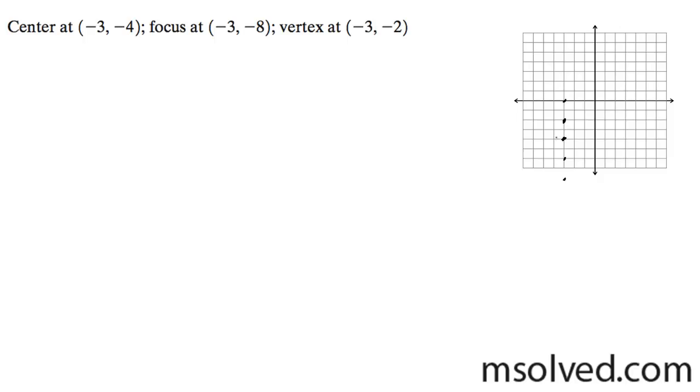The focus they give us is negative three, negative eight, so it's off the graph a little bit. And then one of the vertices they give us is negative three, negative two, which is right here.